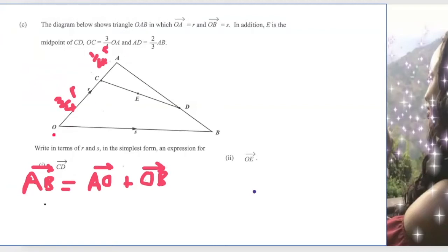Now AO, remember we got OA which is R. But we want AO so we change the direction so it's minus R, and OB we were given to be S. So it means AB equals minus R plus S.